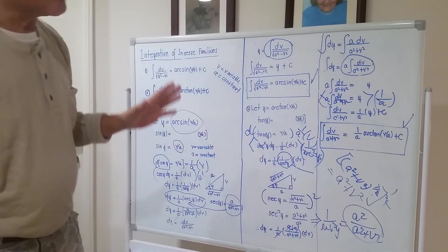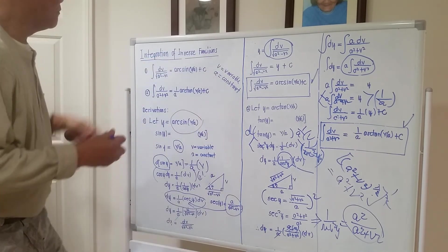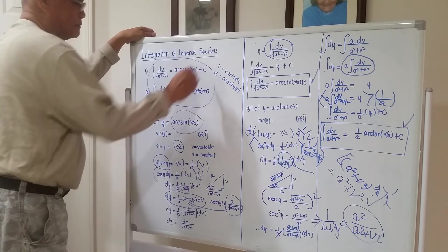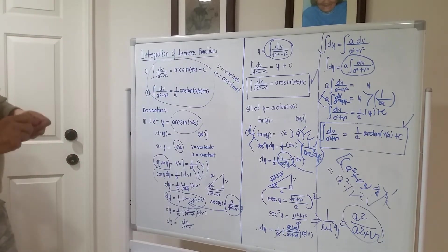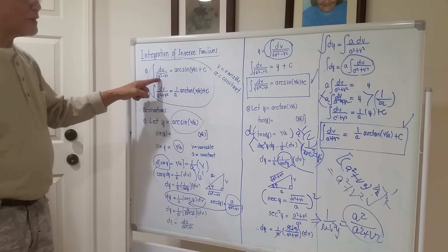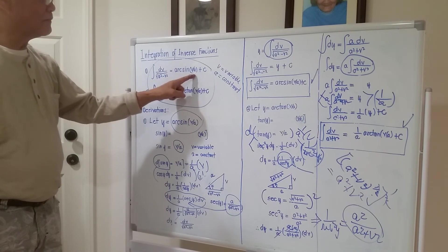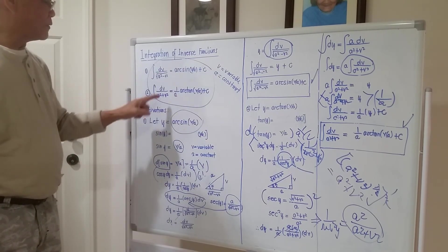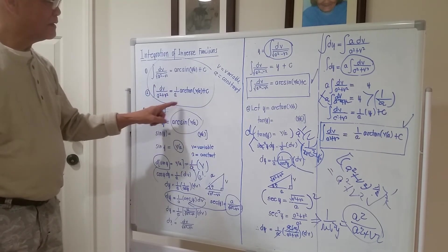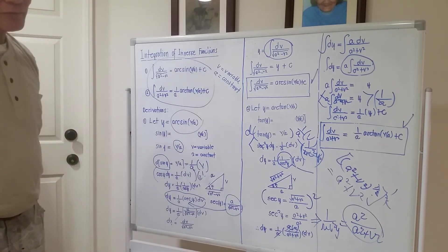So to solve problems under integration of inverse functions, memorize these two formulas. The integral of db over the square root of a² minus b² equals arc sine of b over a plus c. The integral of db over a² plus b² equals one over a times arc tangent of b over a plus c. As simple as that.